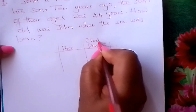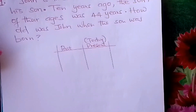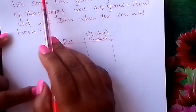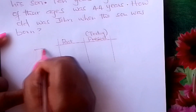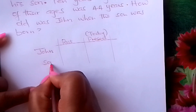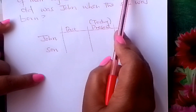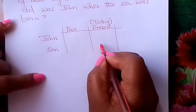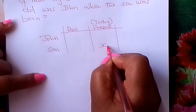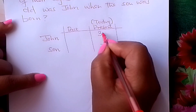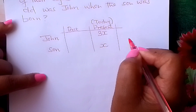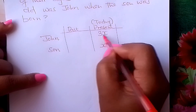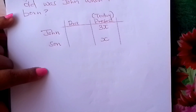You are told that John is three times as old as his son. Put the father — John — in one row and the son in another. The first sentence takes us to the present age. If the son is x, then the father or John will be three times x. Not three plus x — some students make that mistake. It is three times x, so 3x. That is their present age.